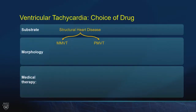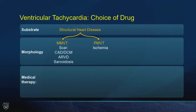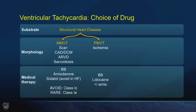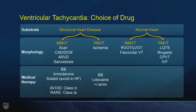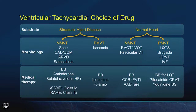For ventricular tachycardia: if there's structural heart disease and it's monomorphic, it's reentrant — treat with beta blockers, amiodarone, or sotalol, but avoid class 1C agents. If polymorphic, they're probably ischemic — reach for lidocaine or beta blockers. If it's a normal heart with monomorphic arrhythmia, these tend to be benign arrhythmias — RVOT tachycardia, fascicular tachycardia — treated with beta blockers or calcium channel blockers. Polymorphic VT in a normal heart: beta blockers for long QT, flecainide for CPVT, and quinidine for Brugada syndrome.